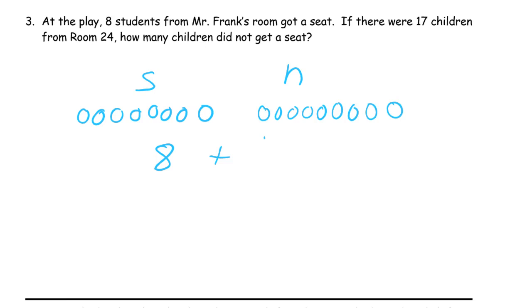And let's see how many is that. 1, 2, 3, 4, 5, 6, 7, 8, 9. So 9 did not get a seat. And there are 17 children. This is the number that we had to figure out. We didn't know. So that's 9 children did not get a seat.